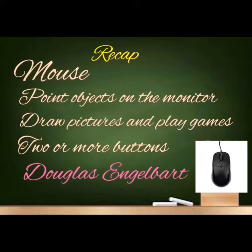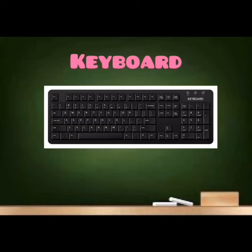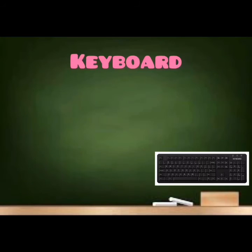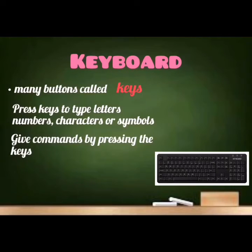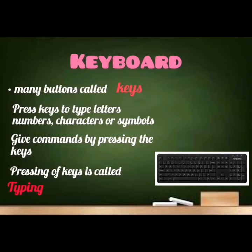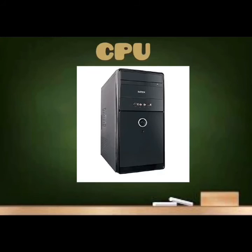Today we are going to see the next main part out of the four parts — keyboard. Did you see the picture of the keyboard? You can see many letters, numbers, special characters, symbols, and arrow marks displayed here. All these things are called buttons, and those buttons are called keys. When we press the keys, we can type letters, numbers, characters, or symbols. This pressing of keys is called typing. We are giving commands to the computer by pressing the keys.